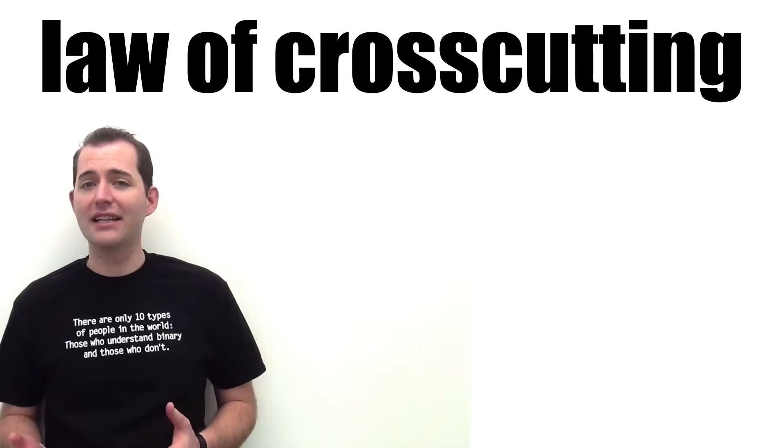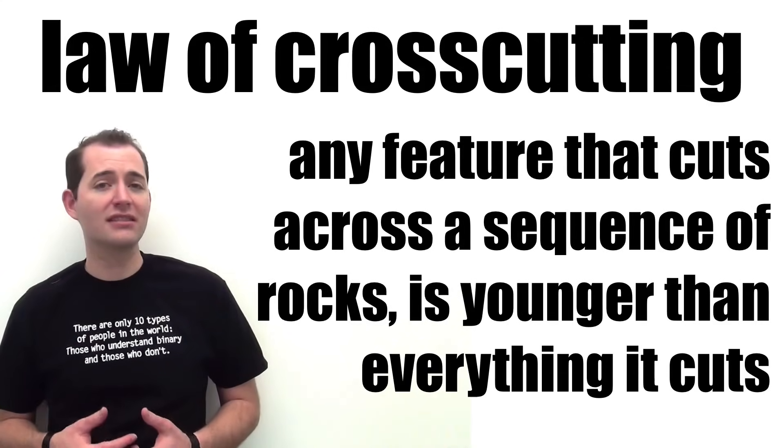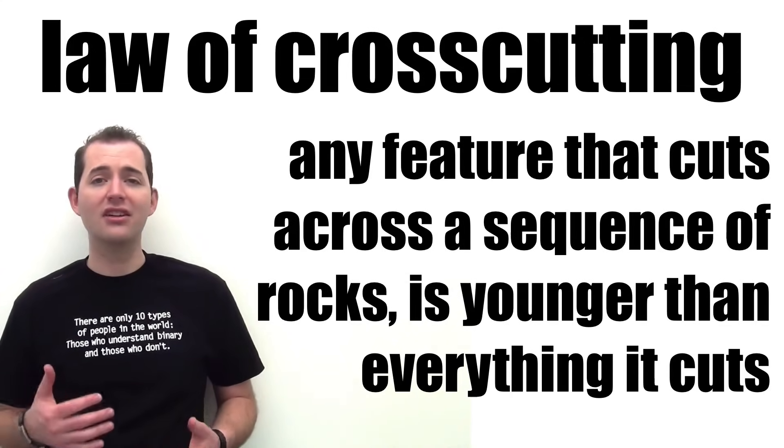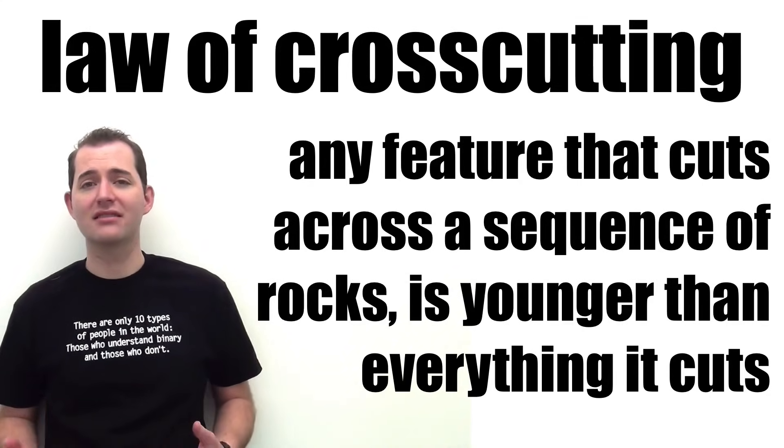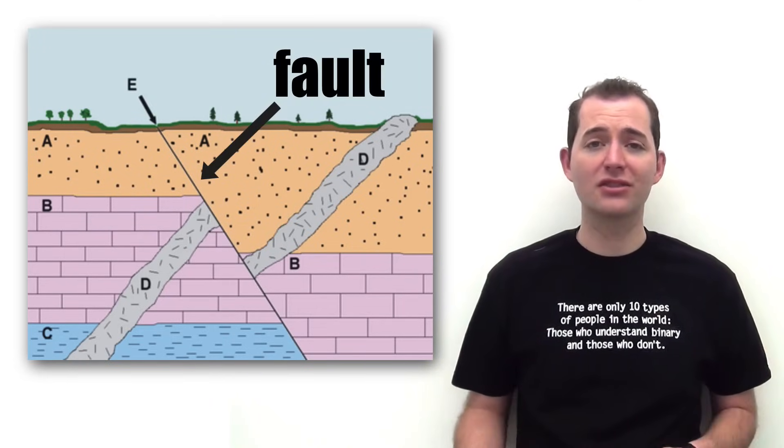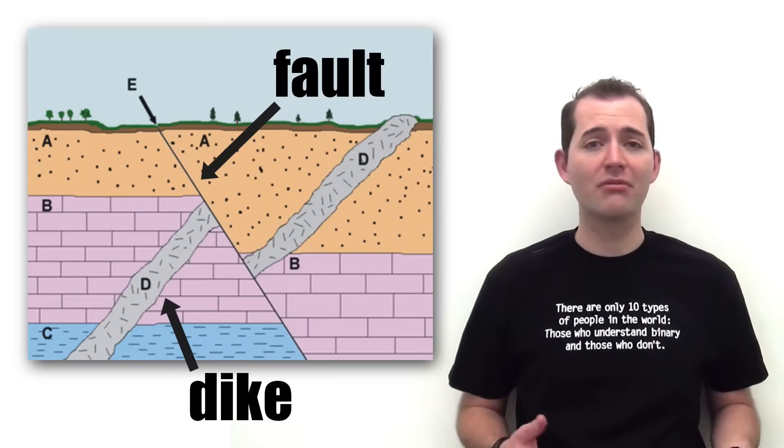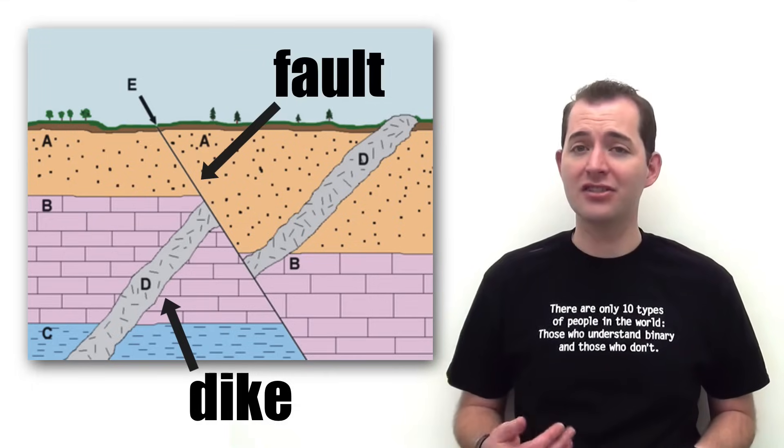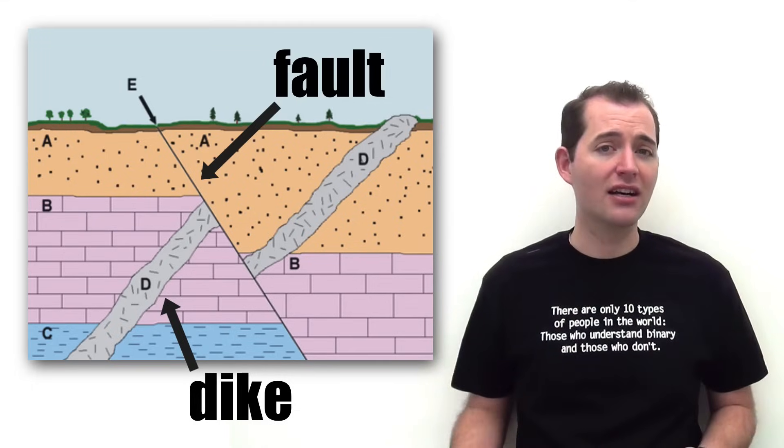Let's now look at the law of crosscutting. This law states that any feature that cuts across the sequence of rocks is younger than everything it cuts. Some of the features that cut across the rock sequence may be a fault or an igneous intrusion, either a dike or a batholith. And these features are younger than any part of the sequence they cut across.